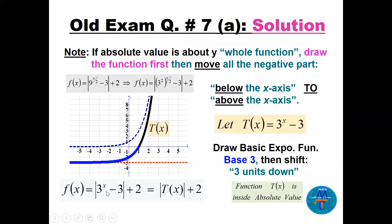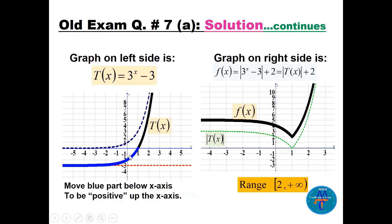T(x) = 3^x - 3 has negative values below the x-axis. Taking the absolute value of T reflects the negative part above the x-axis — this is shown in green. Then adding plus two shifts the entire graph up two units. The final graph of f is the resulting black curve, and the range is [2, ∞).